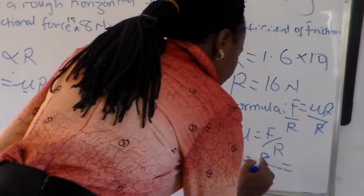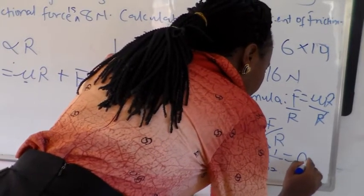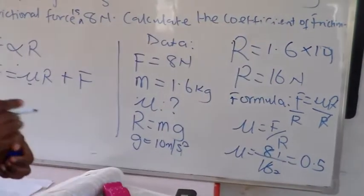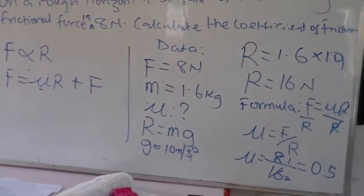So, this is equivalent to here, 1. Here 2. This is equivalent to what? 0.5. That is the value of our coefficient of friction.